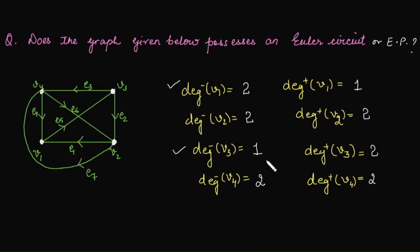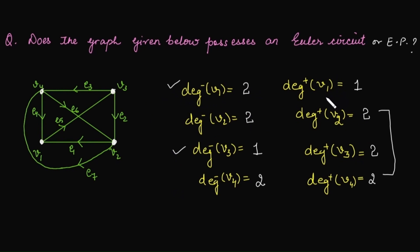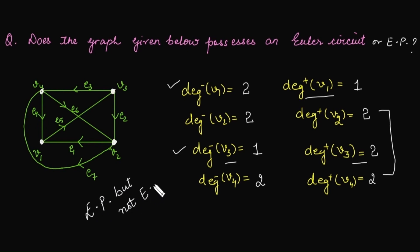The in-degree and out-degree of v1 and v3 are not the same, but for vertices v2 and v4 they are equal. So clearly this graph does not possess an Euler circuit. However, the in-degree of vertex v1 is exactly 1 greater than its out-degree, and the in-degree of vertex v3 is 1 less than its out-degree. Therefore this graph has an Euler path but not an Euler circuit.